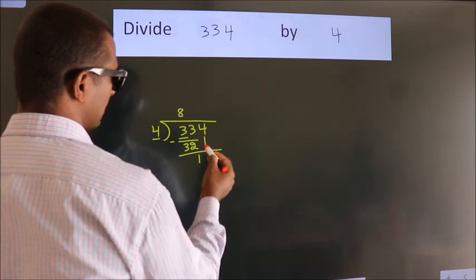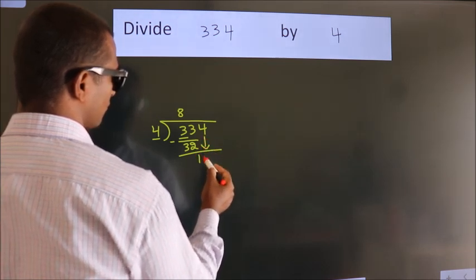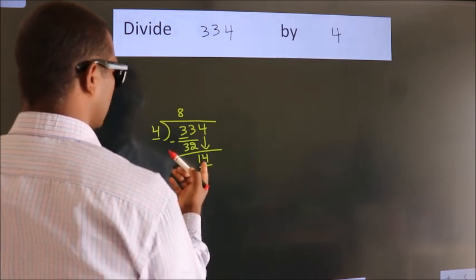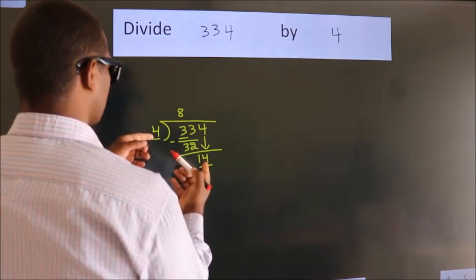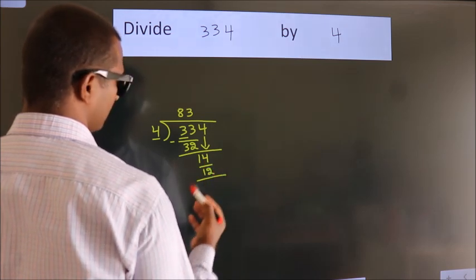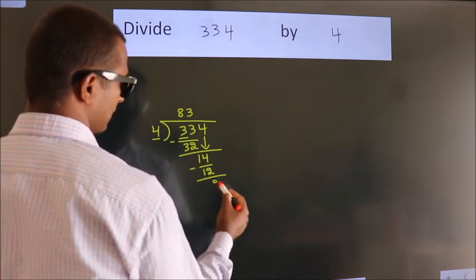After this, bring down the beside number. So, 4 down. So, 14. A number close to 14 in the 4 table is 4 × 3 = 12. Now, we subtract. We get 2.